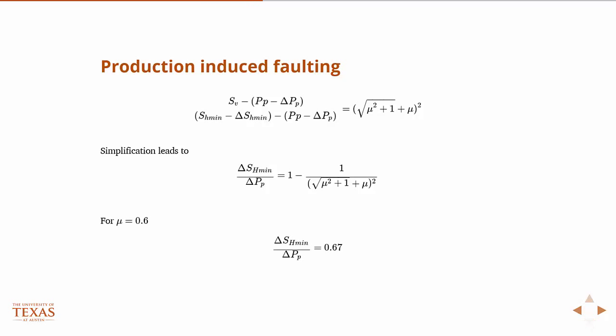And so then, if you plug in a value of 0.6, remember when we were talking about friction, it's always 0.6. Not really, but it's sort of what we always use. So we plug in a value of 0.6, then this whole thing simplifies down to 0.67.